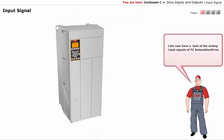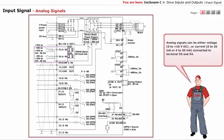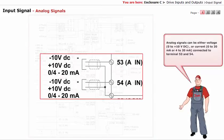Let's now have a look at the analog input signals of FC automation drive. Analog signals can be either voltage 0 to plus 10 volt DC or current 0 to 20 milliamp or 4 to 20 milliamp connected to terminals 53 and 54.